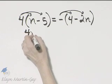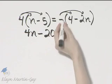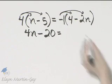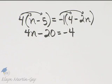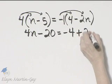So I will take a moment and use the distributive property and remove parentheses. 4 times n is 4n minus 4 times 5 is 20 is equal to. Now you can think of that as negative 1. Negative 1 times 4, that's negative 4. And then negative 1 times negative 2n, that's positive 2n. I'll write plus 2n.